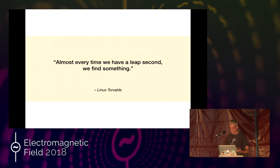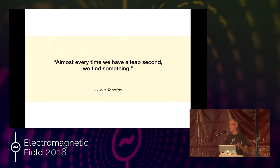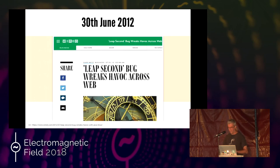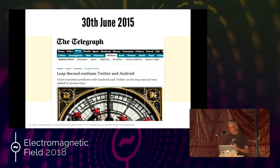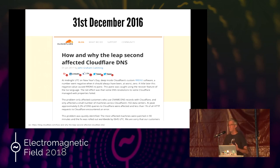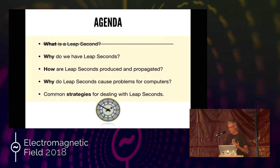We have trouble with them — almost every time there are some problems. Linus was saying we always find something; there are so many different intercompeting systems. The 2008 leap second: Oracle and Sun had some issues. In 2012, a big one — it hit a lot of news sites; Java and Red Hat had issues processing the leap second. In 2015 it was Twitter and Android. The most recent one was Cloudflare's DNS — some problems with the Go language couldn't process it particularly well.